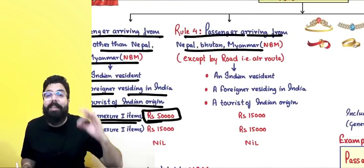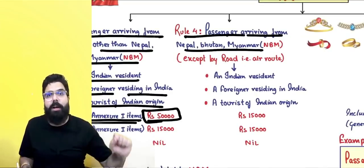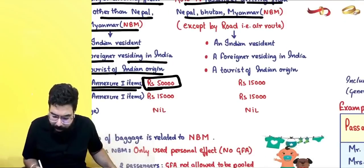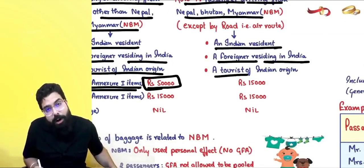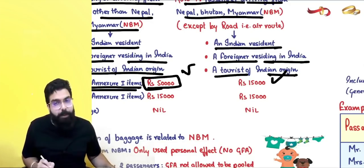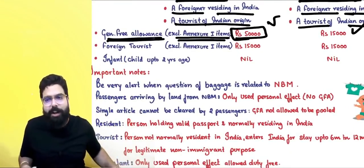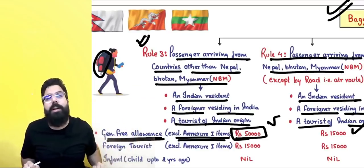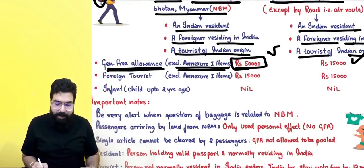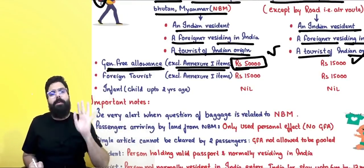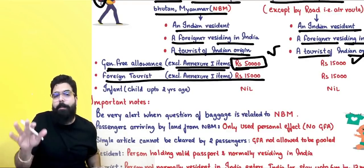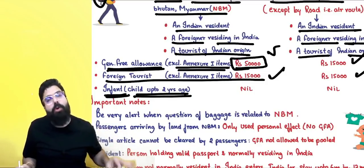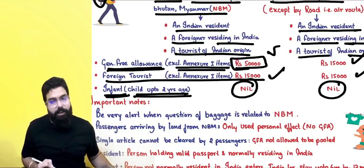If you are coming from Nepal, Bhutan, or Myanmar by land route, no general free allowance is given. If arriving by air from Nepal, Bhutan, or Myanmar and you are an Indian resident or foreigner residing in India or tourist of Indian origin, the GFA is ₹15,000 instead of ₹50,000. For a foreign tourist (e.g., an American tourist), the GFA is ₹15,000 regardless of route or country. For infants (children up to 2 years), nothing shall be allowed.